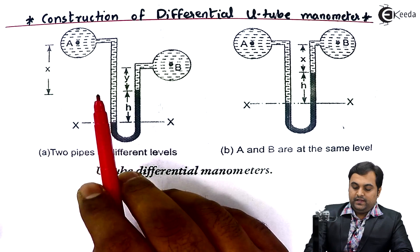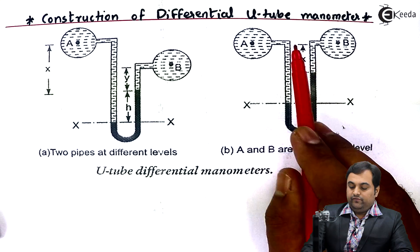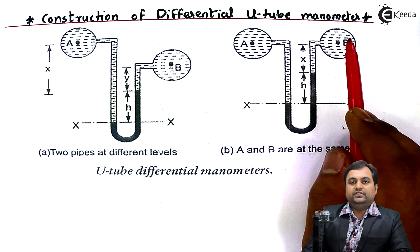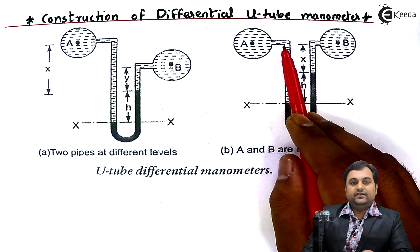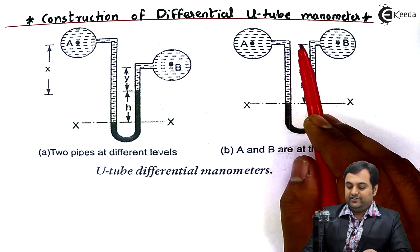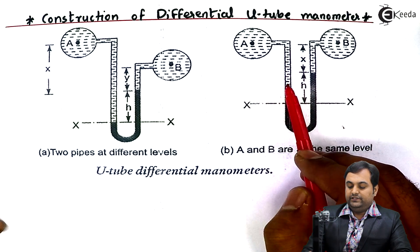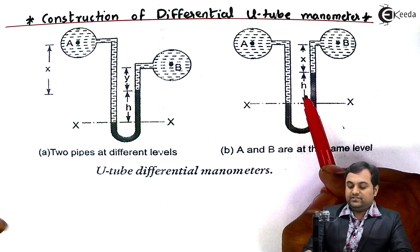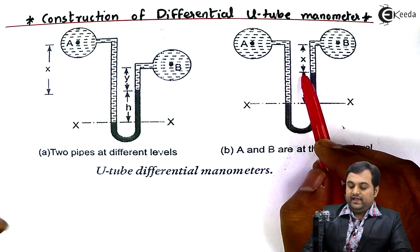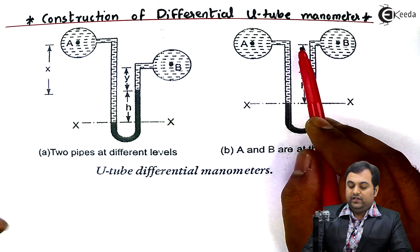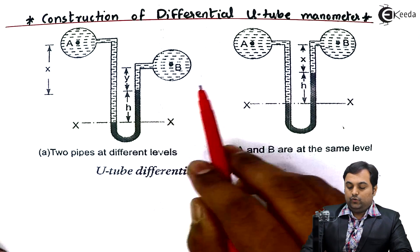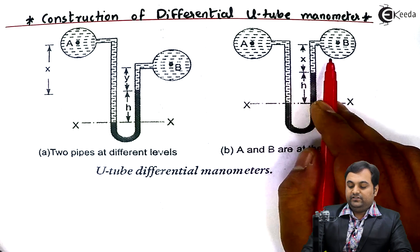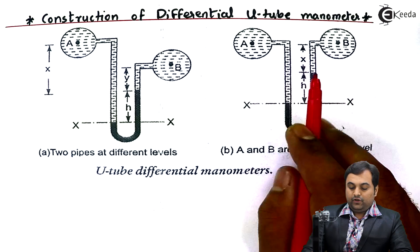In figure number two, we have both pipeline A and pipeline B at the same level. These two pipes can even contain same liquid of same density. In the left limb the fluid would enter and from the right limb also it will enter. The mercury would be balanced and here we have H as the difference of mercury level. X is the distance from the mercury level up to the center of pipes A and B. Once these readings are balanced, we can take the values and find the difference of pressure.